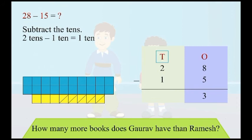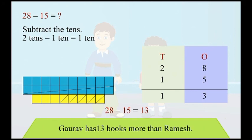Subtract the tens. 2 tens minus 1 ten is equal to 1 ten. Write 1 in the answer. So 28 minus 15 is equal to 13. This means Gaurav has 13 books more than Ramesh.